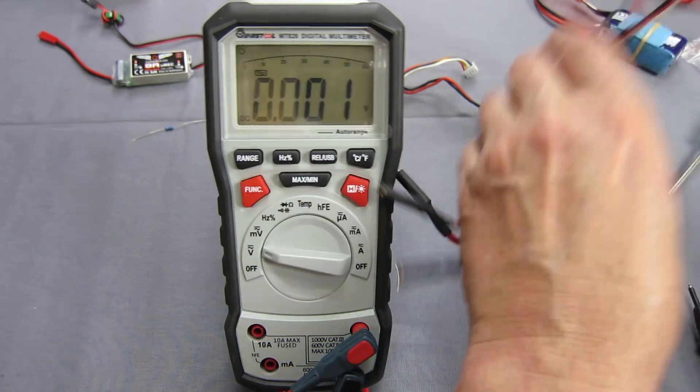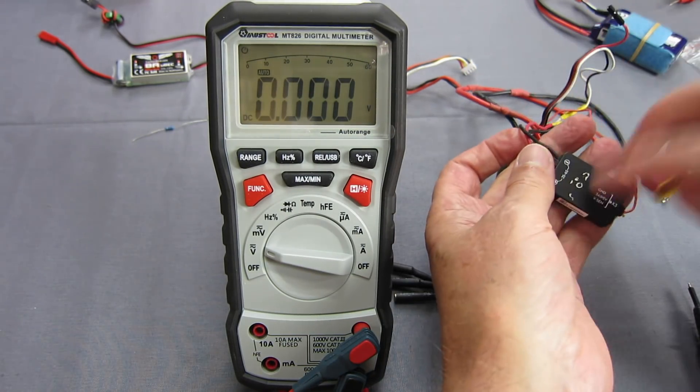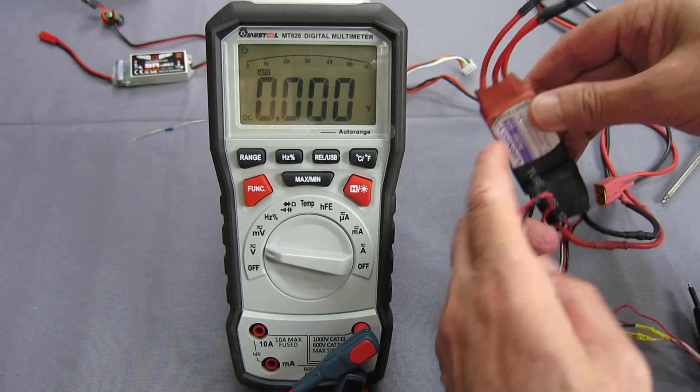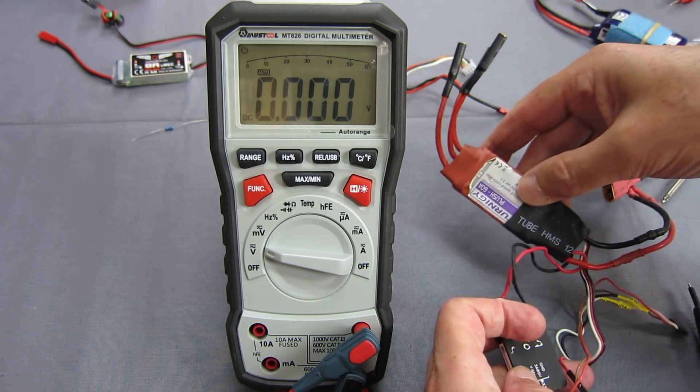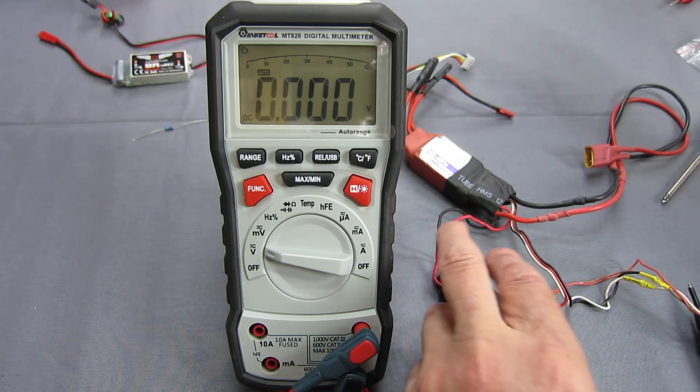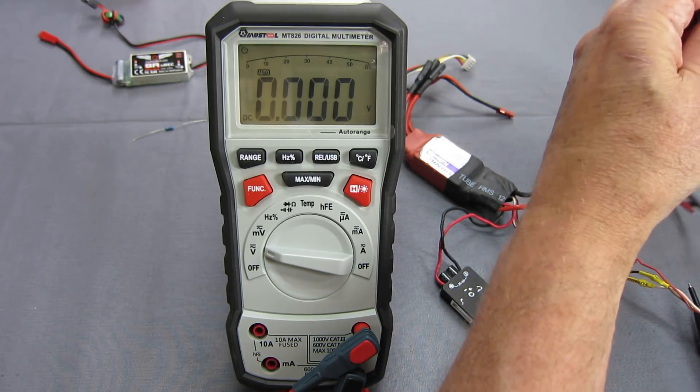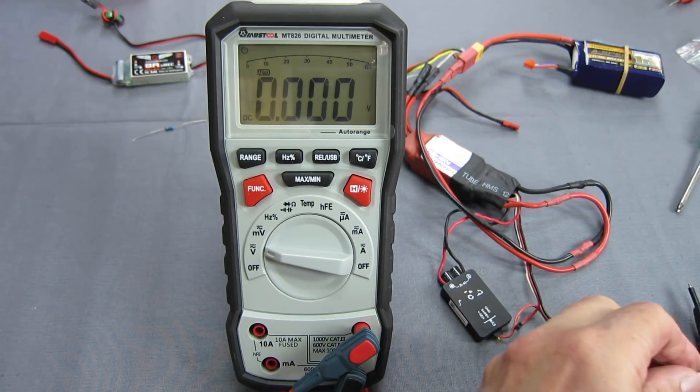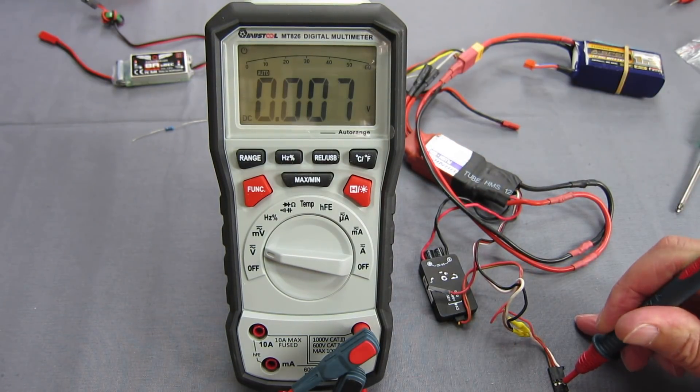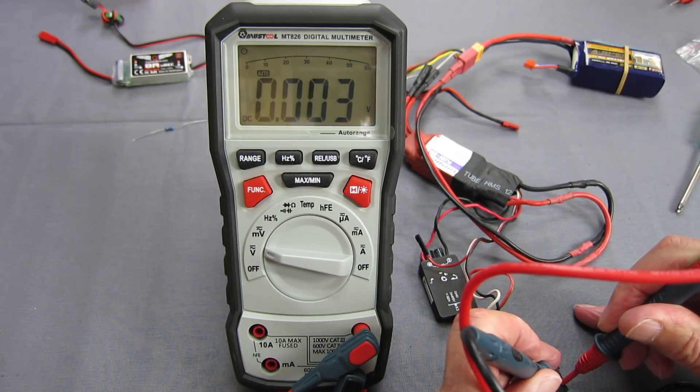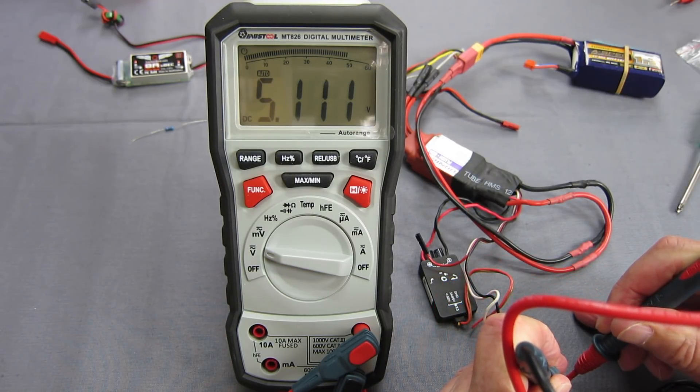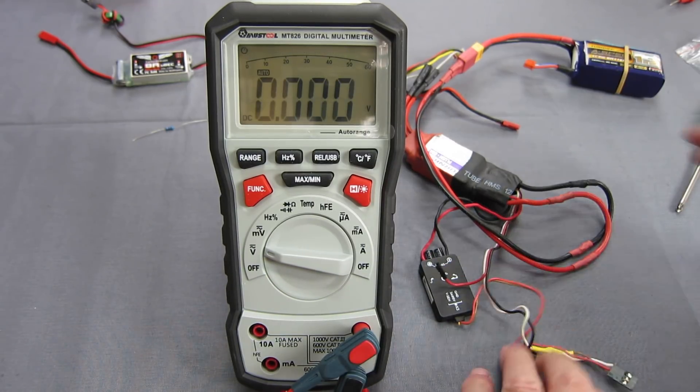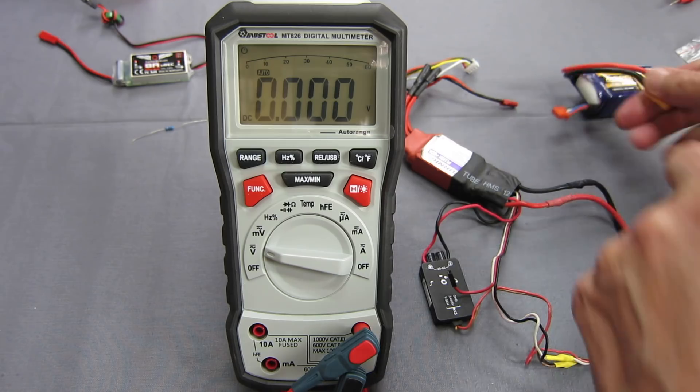Now I have another BEC here that is supposedly exactly 5 volts. So let's check that one. And it's wired up to replace the BEC on an ESC specifically for use with the flight control board. So let's plug that in. See what we're getting out. 5.1 volts. So that's closer to 5 volts than the other BEC. That's good to know. Essential information this sort of stuff.